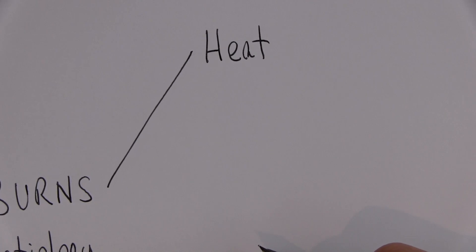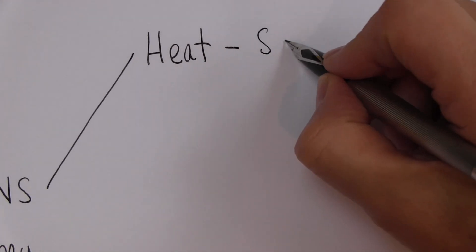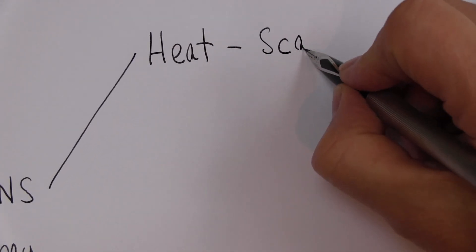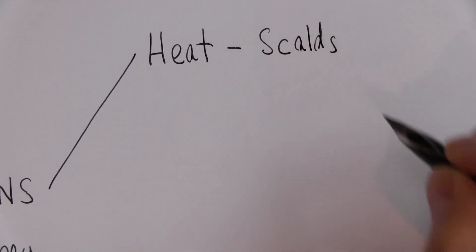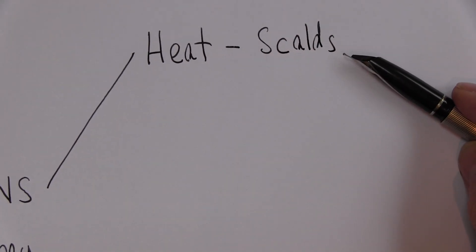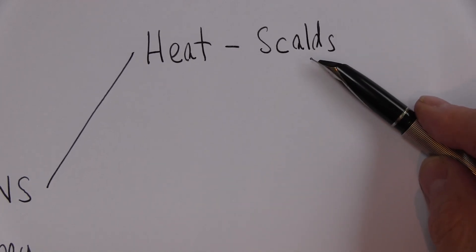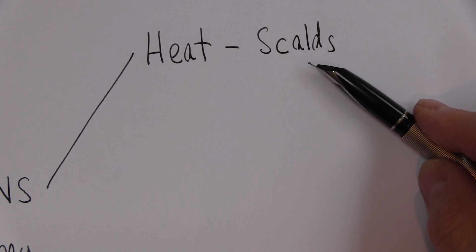A lot of burns are caused by moist heat involving hot water and we call these scalds. These are caused by hot water or by hot steam. Steam, if it's pressurised, can actually be hotter than 100 degrees centigrade. About 80% of the burns we see in children are actually caused by scalds from hot water.